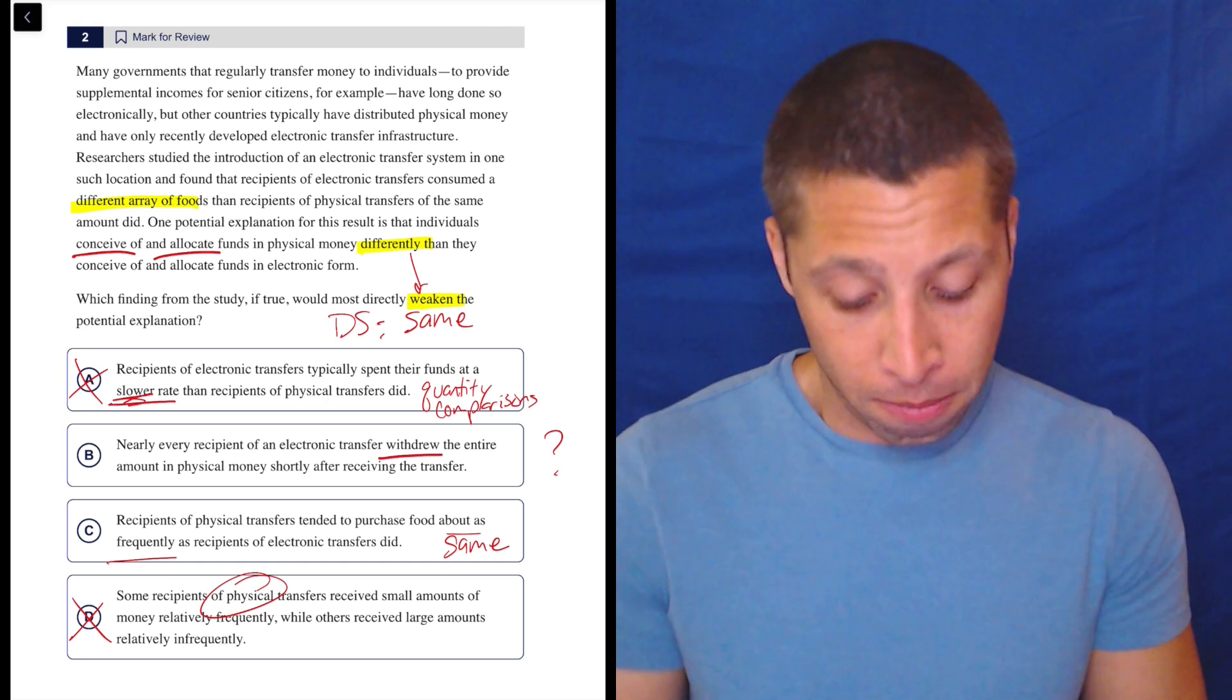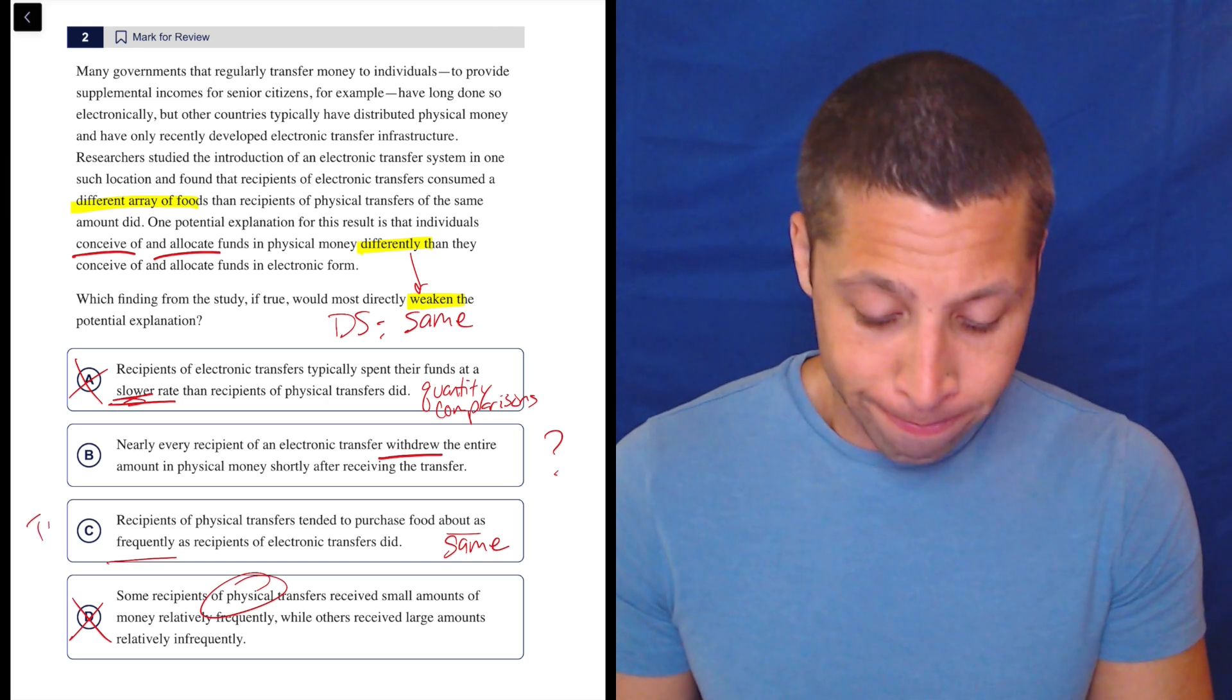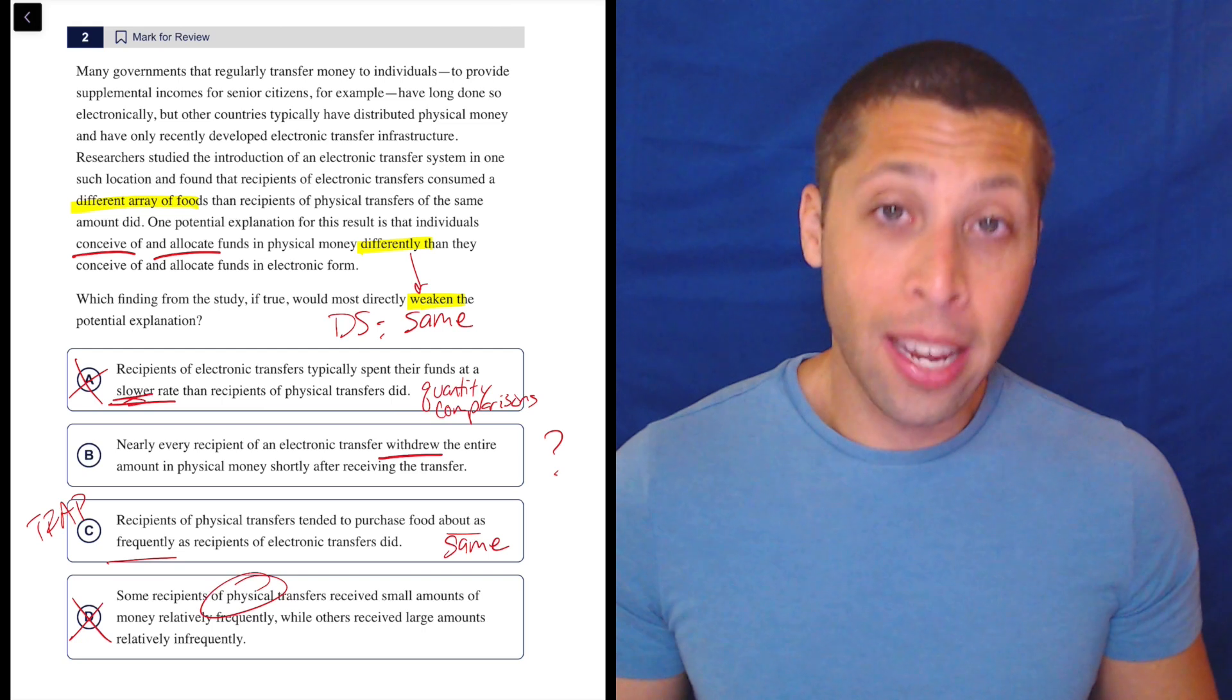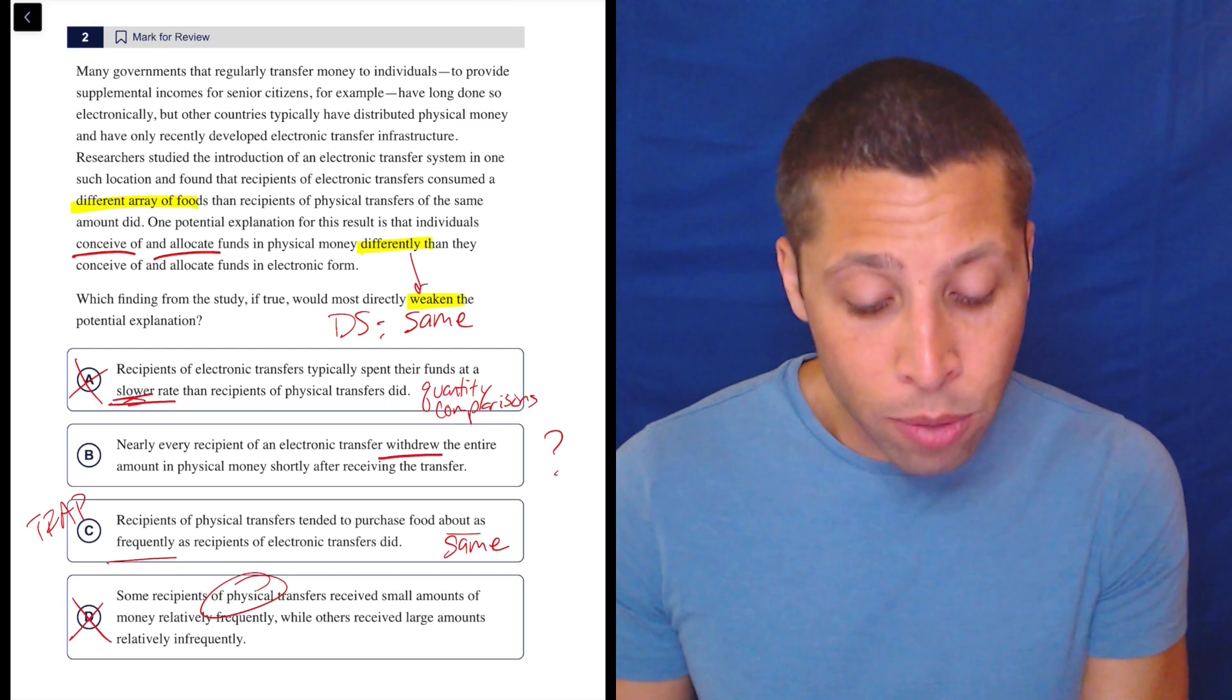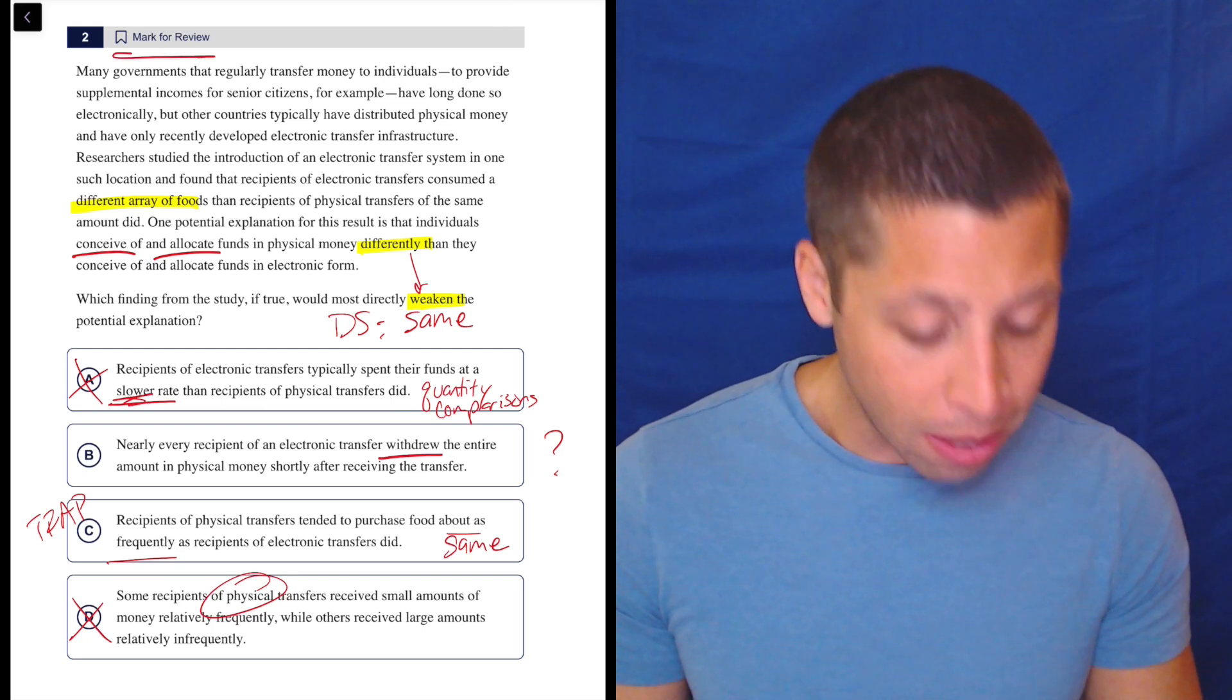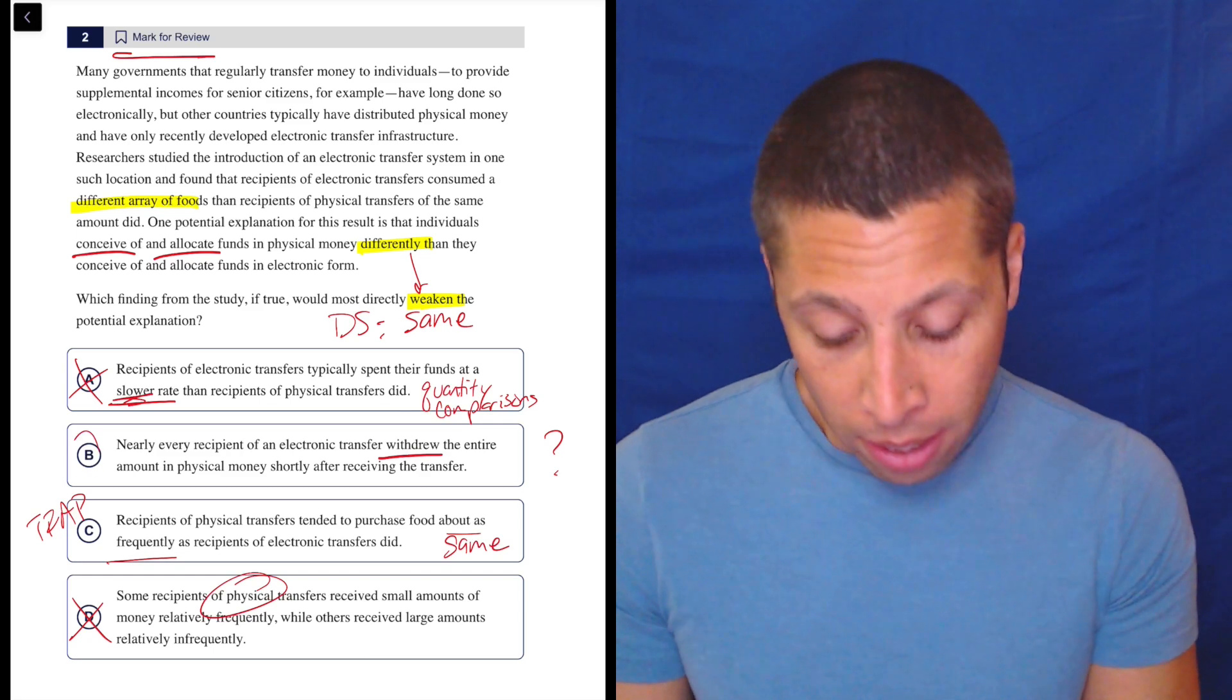And this is where I would have just picked C and moved on. But I'd be wrong. C is not the answer. And I would have been very confident. I do not think I would have bookmarked this. I would have just been like, yep, my dumb summary matches. We're good to go. The answer is B, though.